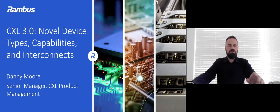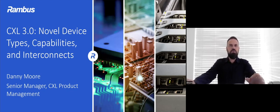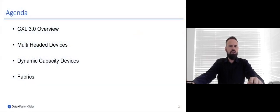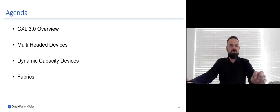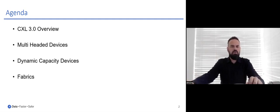I'm currently driving CXL product management for Rambus and with the release of the CXL 3.0 specification, I get to speak to you about some of the new device types, new capabilities, and the interconnects introduced in the latest release. For a quick agenda, I'll give an overview introduction of 3.0 and some highlights of the new specification, then jump into the novel device types, the multi-headed devices, new capabilities such as the dynamic capacity device framework, and finally touch on some of the new expanded fabric capabilities that really bring CXL fabrics beyond the rack.